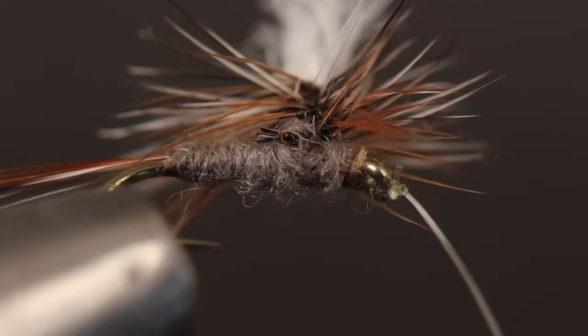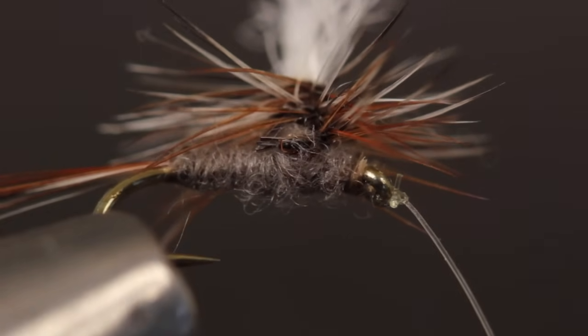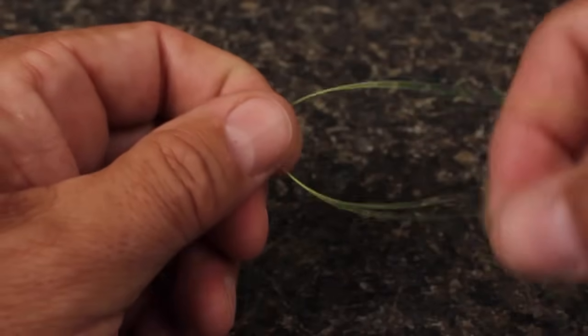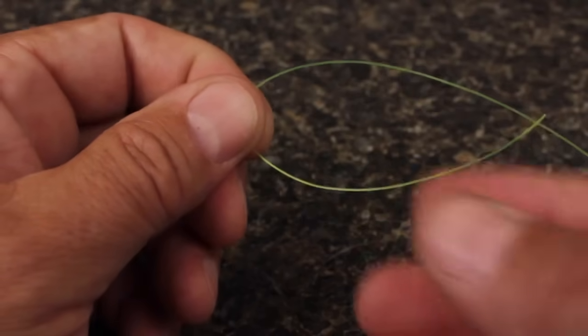The Davy Knot works best with flies size 18 and under. For larger flies, a double Davy Knot adds a bit of protection but is also slightly bulkier.